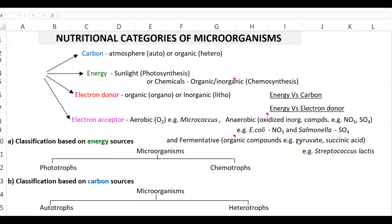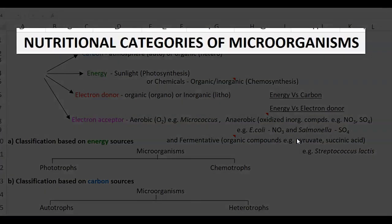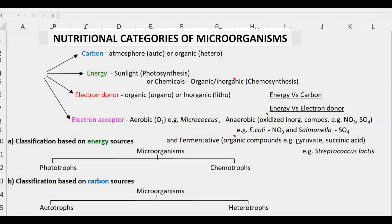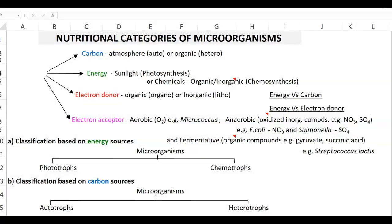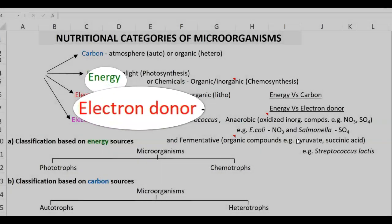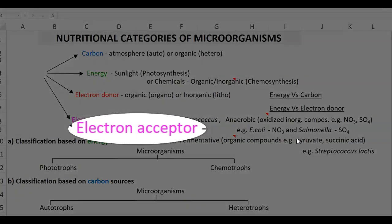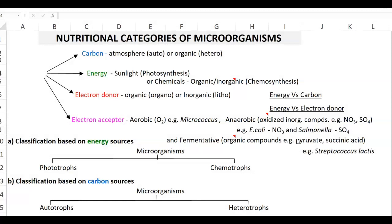Dear students, in this screencast video lecture, we will try to understand how microorganisms are nutritionally classified. For their classification, we first need to understand the following four factors: carbon, energy, electron donor, and electron acceptor.